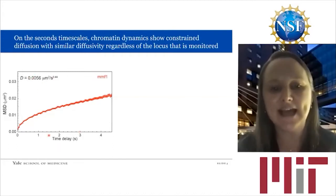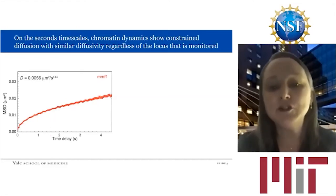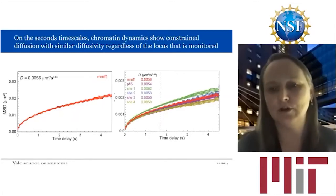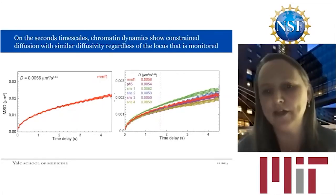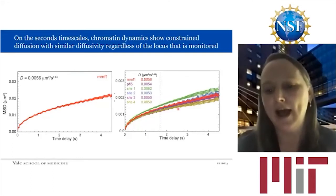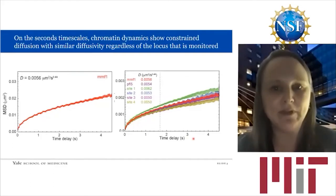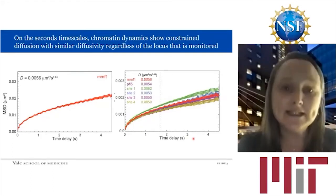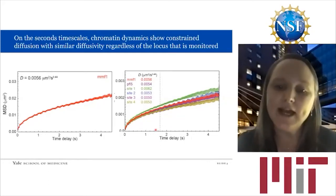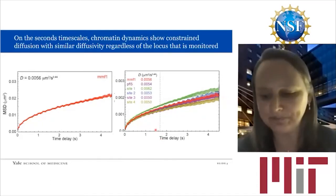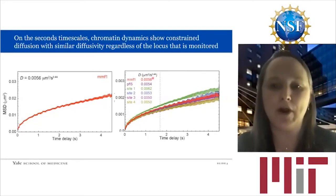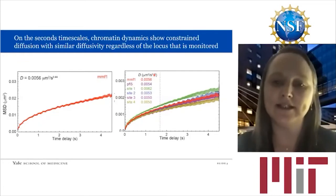Typically what we observe for chromatin dynamics is an MSD plot showing constrained diffusion — instead of being linear, the motion of the locus falls off over time. This can be described by a scaling exponent; we determined the appropriate scaling exponent for fission yeast to be between 0.44 and 0.45. If we look at many different loci across the fission yeast genome, we see that the diffusivity is very similar on the seconds timescale, giving us a characteristic behavior we can use to describe this scaling exponent.